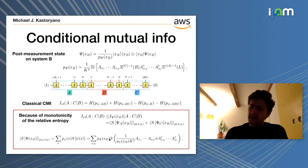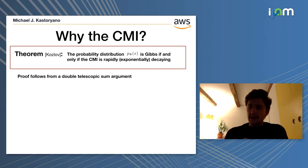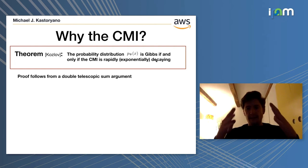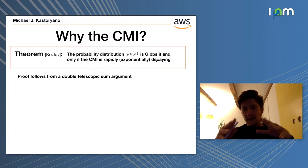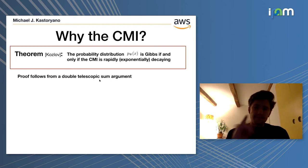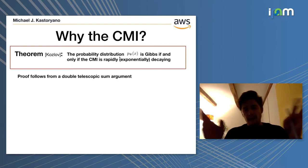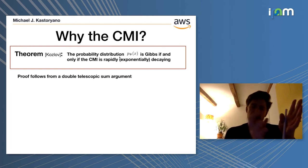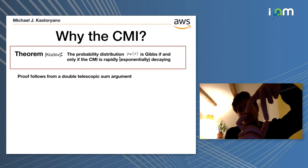From a fairly complicated expression for the conditional mutual information, you land with a much more convenient expression. So you might ask, why do you care about the conditional mutual information? This has to do with a not so well-known result of Kozlov dating back to the eighties, which says that the probability distribution P of X is Gibbs if and only if the conditional mutual information is rapidly decaying. When I say Gibbs, I mean quasi-local in the sense that if the conditional mutual information has exponentially decaying tails, then the locality in the Gibbs state will also have exponentially decaying tails. The proof is quite simple - you do a double telescopic sum of the logarithm of the probability distribution.